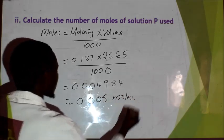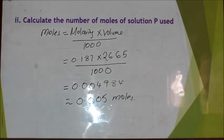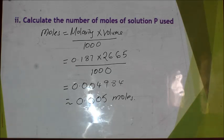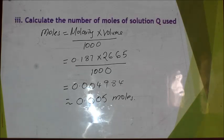Some computation using your calculator should give you 0.004984 moles, which you can round off to 0.005 moles. This will still give you good accuracy for the calculations.